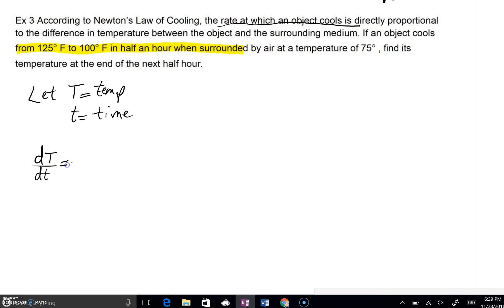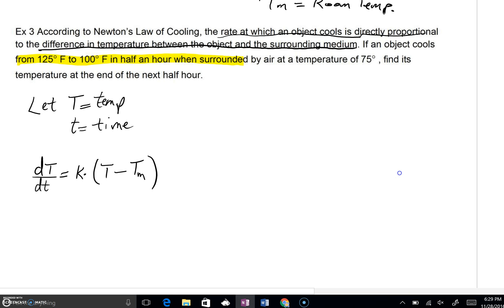That's directly proportional, so that means we're going to have some constant, now you could put K or C, multiplied to the difference in temperature between the object and the surrounding medium. Well difference of course means we're going to subtract, we're going to take the temperature of that object minus the surrounding medium temperature. Generally when you see the surrounding medium, that's going to represent the room temperature.